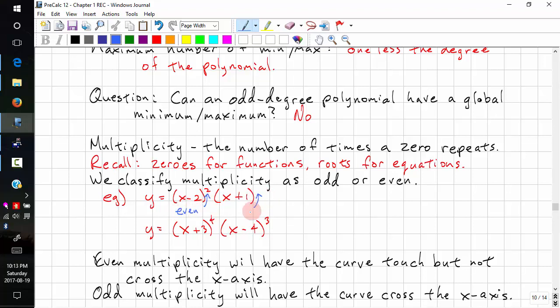So this is even. This is odd. And when there's no exponent, it's implied that it's one. And here we have even. And here we have odd as well.